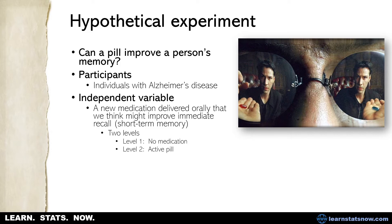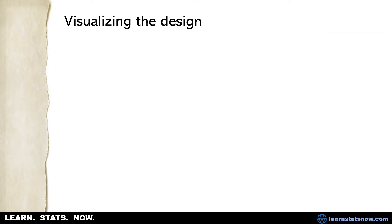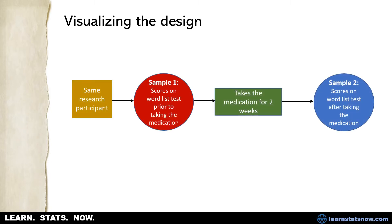There are two levels to this experiment. The first level is when the person has not taken the medication at all — before any intervention. The second level is actually taking the pill. We need measurements of immediate recall under both levels for the same individual. The dependent variable is the number of words recalled from a word list test two weeks after first taking the medication regimen. We'll do a pre-test and then again two weeks after starting the medication.